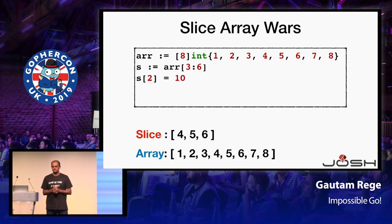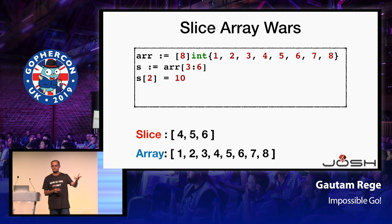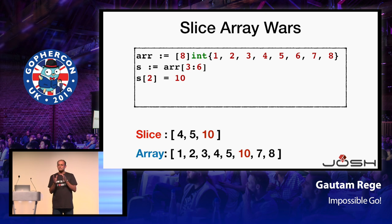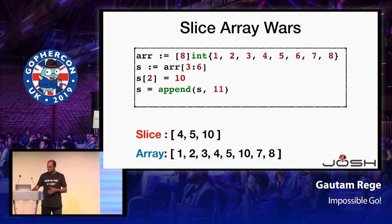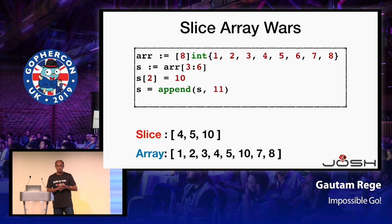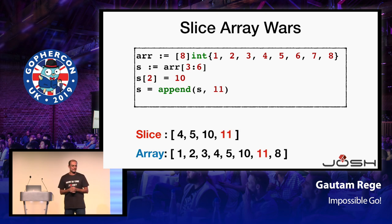I've manipulated the slice. What's the expected output — what's the manipulation of the slice in the array? Do both change? Yes, both change. Why? Because the slice is peeking into the array. Now I'm appending to the slice — is a new slice getting created, or is the same array getting changed? Both change. So the array gets manipulated and the slice is changed.